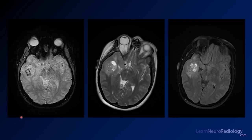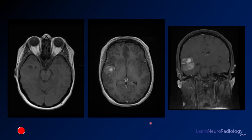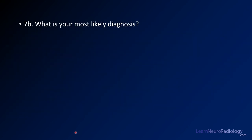Now we're going to take a look at some more images from this case, similar to one of these ABR two-part questions where you have to click through. We have blood-sensitive GRE imaging, a T2 in the middle, and a FLAIR on the right — you've got that abnormality in the right temporal lobe. Here's your pre- and post-contrast imaging: axial pre-contrast, axial post-contrast, and coronal post-contrast. We did see a little calcification, so your question is: what's your most likely diagnosis?